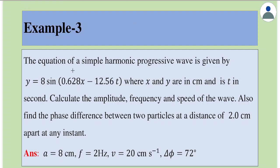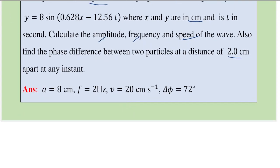Example 3: The equation of a simple harmonic progressive wave is given by y = 8 sine(0.628x - 12.56t), where x and y are in centimeters and t is in seconds. Calculate the amplitude, frequency, and speed of the wave. Also find the phase difference between two particles at a distance of 2 centimeters apart at any instant. Let's write the equation first.